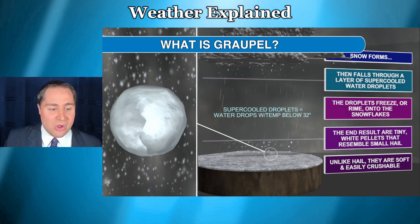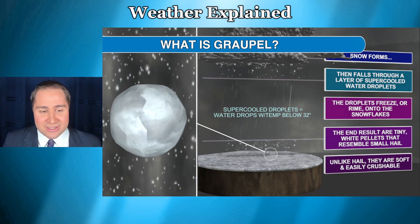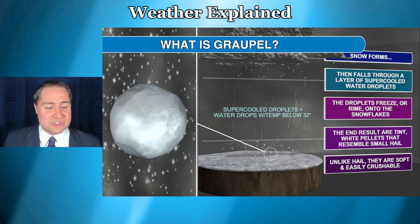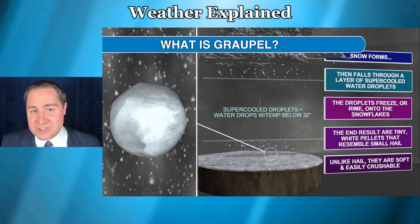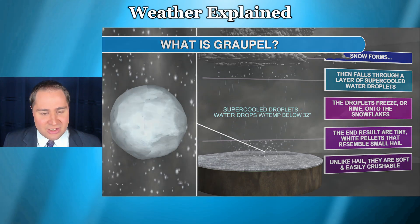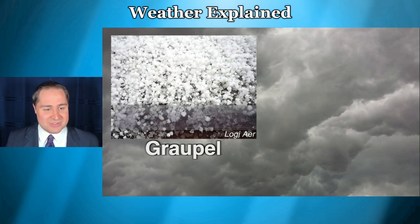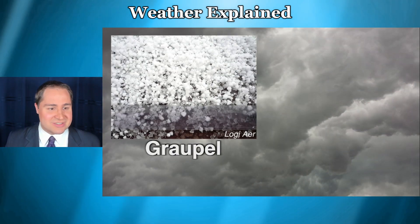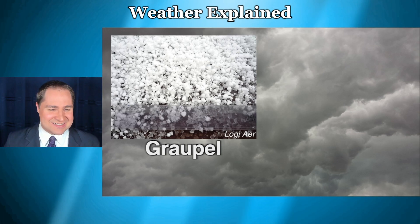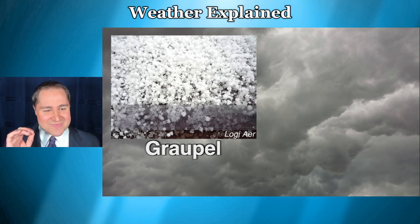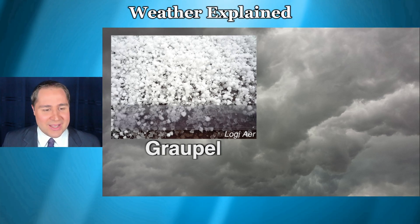So if it's small, white, and hard, it's hail. If it's small, white, and soft, it's graupel. When graupel is laying on the ground, this is what it looks like. And really the best way to describe it, if you ask me, is Dippin' Dots — these tiny white pellets of snow and ice.